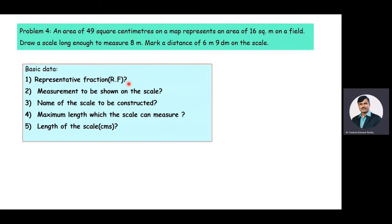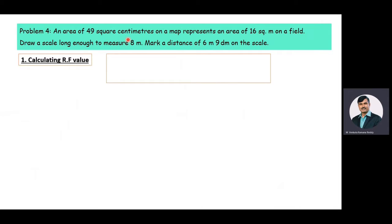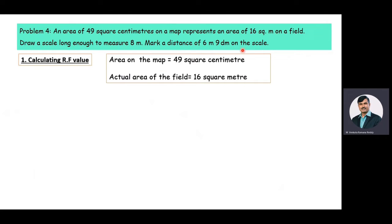In the problem, the area on the map is given as 49 square centimeters and the actual area is 16 square meters on a field. The RF value is equal to length on the drawing divided by actual length. To calculate the length on the drawing, we take the square root of 49 square centimeters, and for the actual length, we take the square root of 16 square meters.